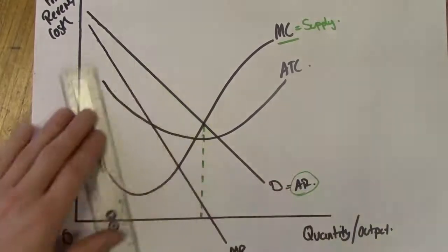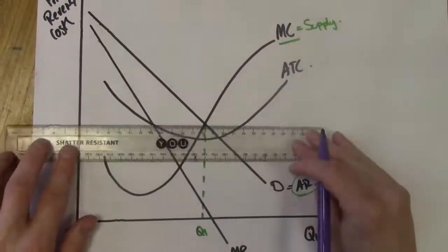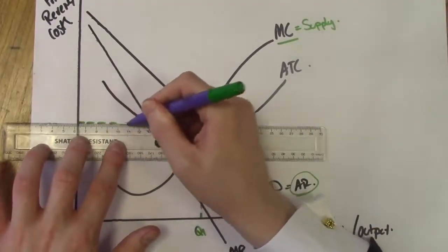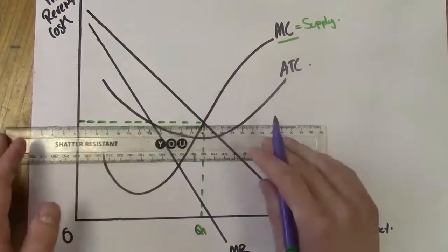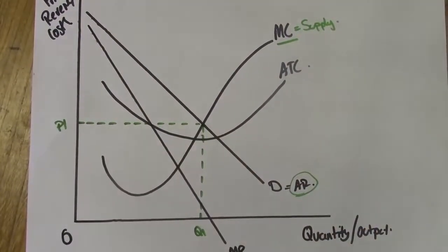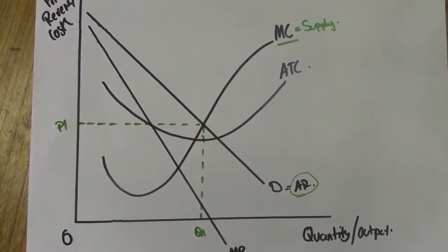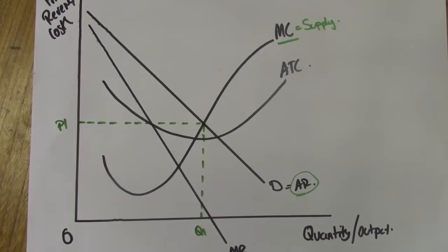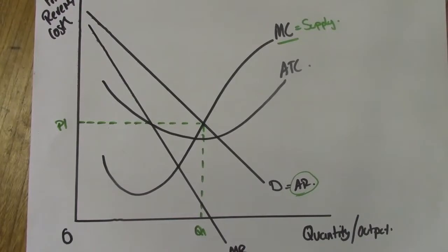So allocative efficiency is when MC equals AR, when demand equals supply. Follow those two curves across — demand equals AR and MC equals supply — and you'll meet a point. Get your ruler, draw your dashed line to show Q1 and then P1. At P1 and Q1, society's needs are being met: the right number of customers are receiving the right quantity of the good or service at a price where everybody is able to afford it.